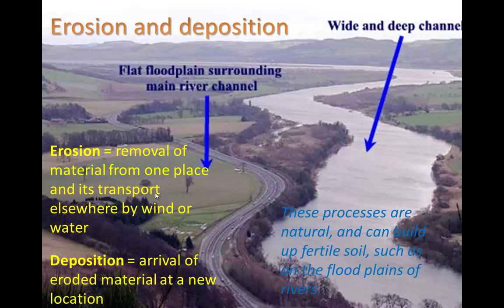If you think about where some of the origins of agriculture are, they're typically in flood plain areas like the Euphrates River in the area we call Mesopotamia. It's well known as one of the earliest civilizations due to its use of agriculture.